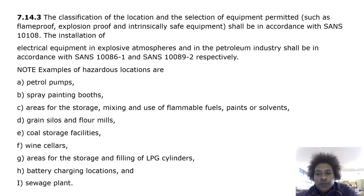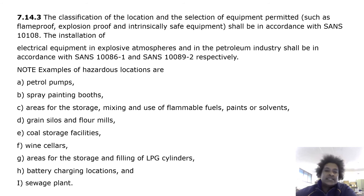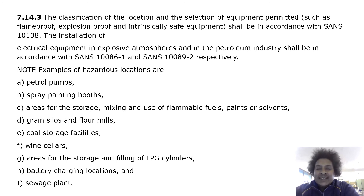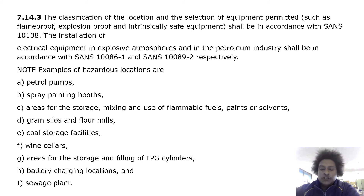Note: examples of hazardous locations are petrol pumps, spray painting booths, areas for storage, mixing and use of flammable fuels, paints or solvents, grain silos and flour mills, coal storage facilities, wine cellars, areas for the storage and filling of LPG gas cylinders, battery charging locations and sewerage plant.